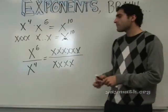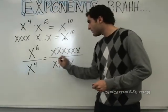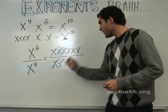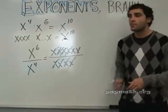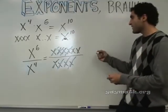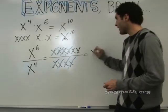One. Gone, gone, gone. One, two, three, four. How many left? Two. Two on the top. So this becomes x squared.